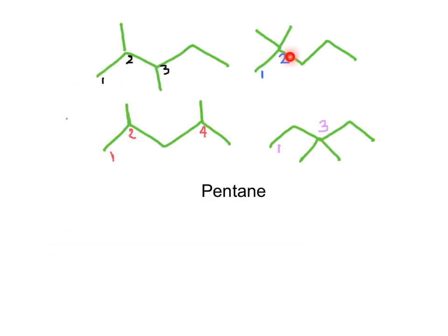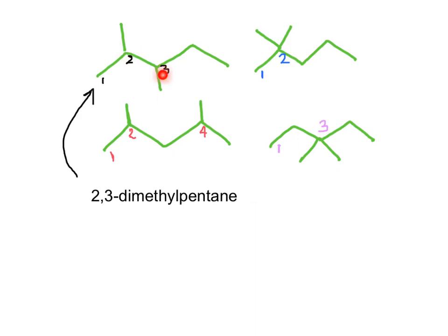Now we have four different constitutional or structural isomers for substituted pentane. In one case we have substituents on carbons number two and three; in another on carbon number two; and in another on carbons two and four. They will have different names according to IUPAC. The first name is simple: two methyl groups in positions two and three, using the multiplier 'di' to indicate two of the same — 2,3-dimethylpentane.